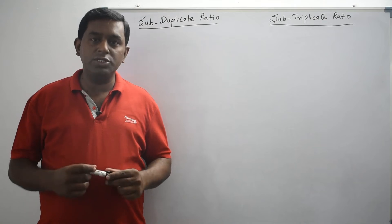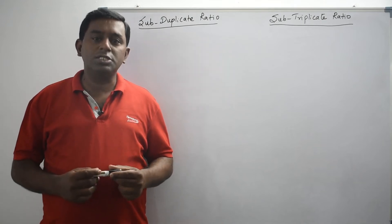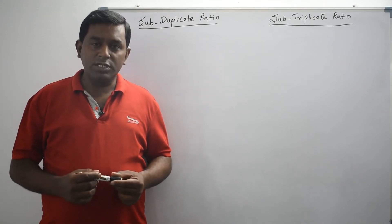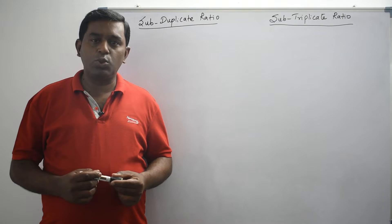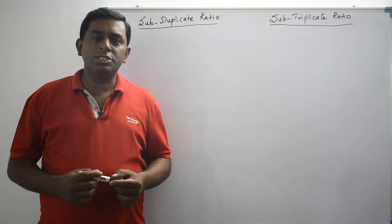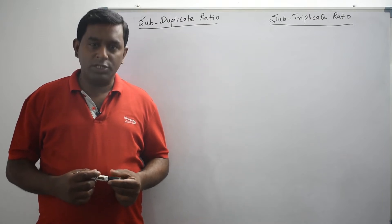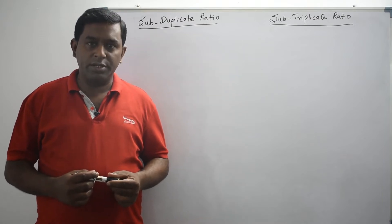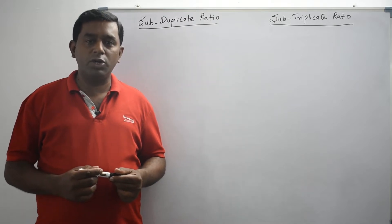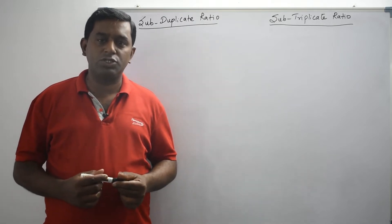In this section we are going to see subduplicate ratio and subtriplicate ratio. First let's understand what is subduplicate ratio. If you want to get subduplicate ratio for the ratio given, what you have to do is you have to take square root for both the first term and second term of the given ratio.